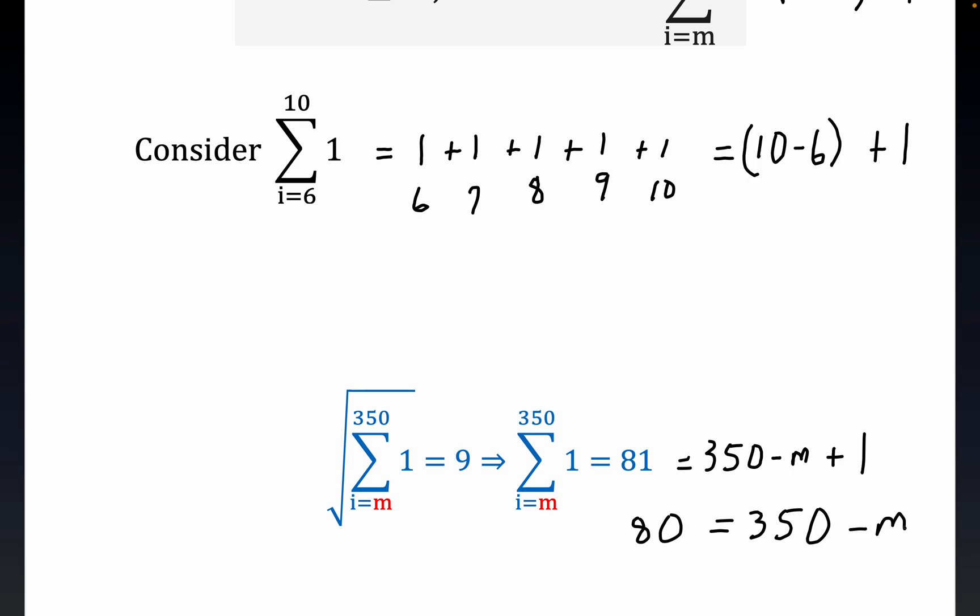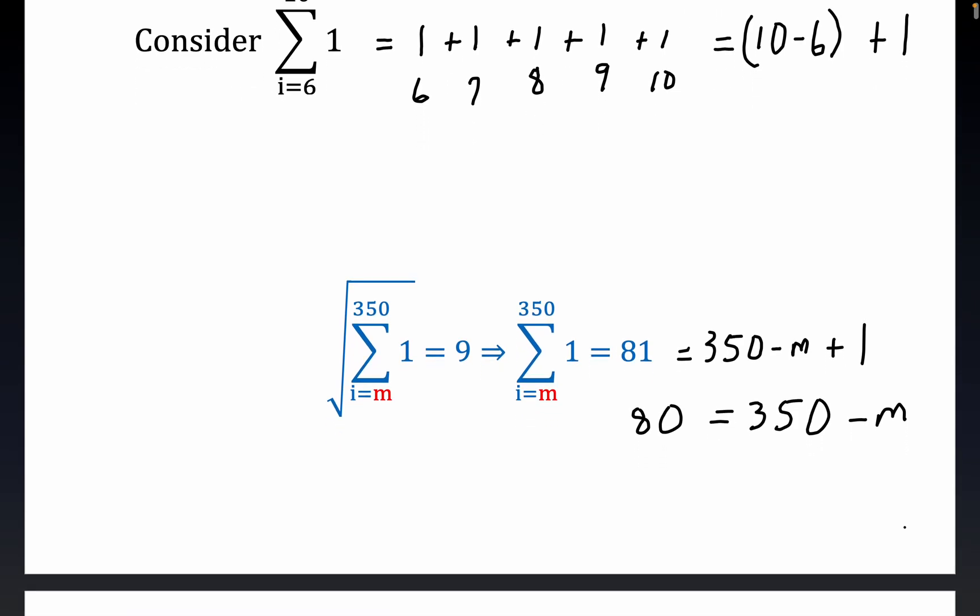And that certainly indicates what? That m has to be 280, 270... so m is equal to 270. Is that right folks? 270 plus 80 is 350. So that's the answer here: m is equal to 270.